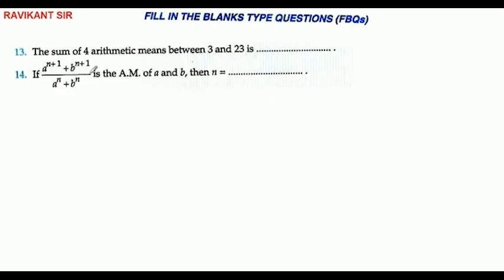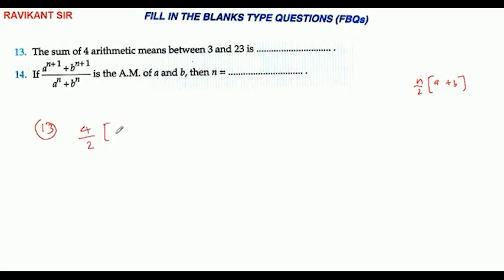The sum of the fourth arithmetic mean between 3 and 23. We have n by 2, with a and b, adding the number of 4 arithmetic means by 2. Here we have 3 plus 23, and here we have 26, giving us 52.